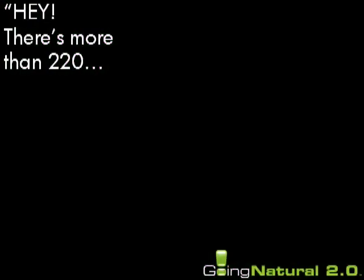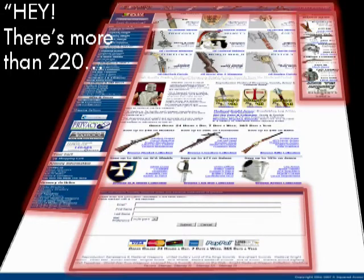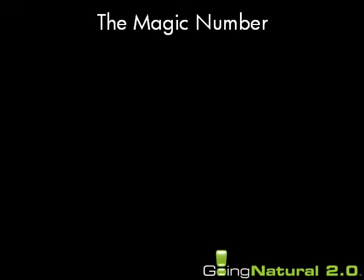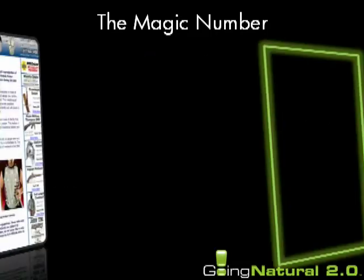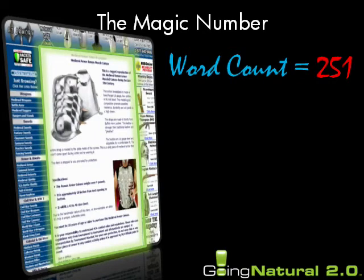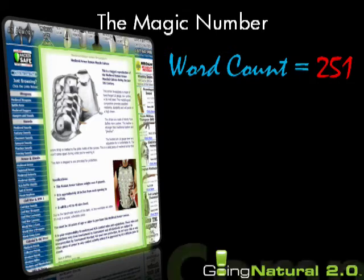Yes, you can see far more words in my template than 220, but computers can't — and I'll show you how, why, and when you should do what I do, just not yet. Once you've counted the words in your template, write that number down. That number is now your target for words to shoot for whenever you write content in your content container. Having more words in your content container than your template reduces sameness, which dramatically reduces the potential for a page being flagged as duplicate content.